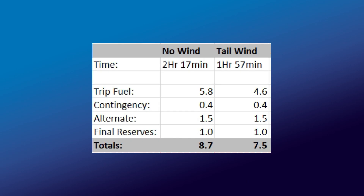There are two sets of figures: one entitled 'no wind', which is if we were flying the route in still air — that would take us 2 hours and 17 minutes. The one entitled 'tailwind' covers the conditions we've just discussed, so we're expecting that to take 1 hour and 57 minutes due to the strong tailwinds.